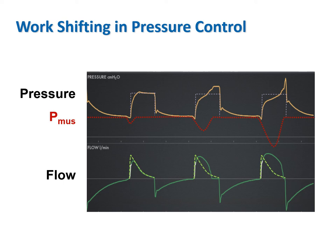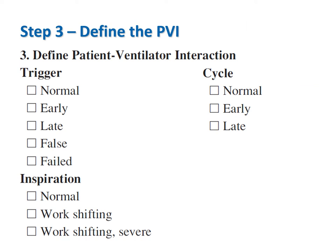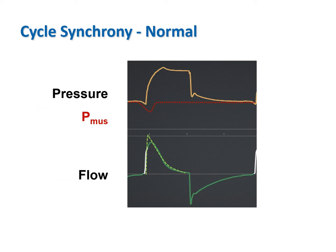During pressure control, an increase in PMUS causes an increase in both the volume and flow waveforms, again according to the equation of motion—work is shifted to the patient as tidal volume increases. There are three phases of the cycle phase: as with triggering, this phase can be normal, early, or late.